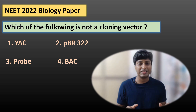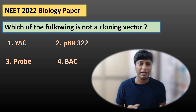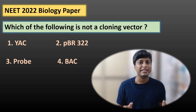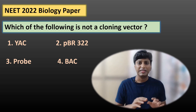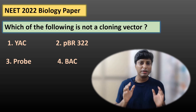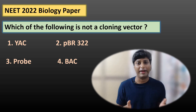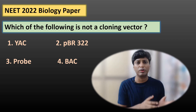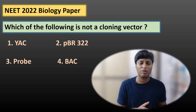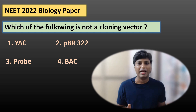YAC is yeast artificial chromosome. PBR322 was the first artificial cloning vector constructed by Bolivar and Rodriguez. BAC is bacterial artificial chromosome — another type of cloning vector formed using a different type of plasmid. Out of all four options, it is only probe which is not a vector, because probes are complementary DNA strands used to locate the desired DNA fragment. Probes are not used for cloning, so the right answer is probe.